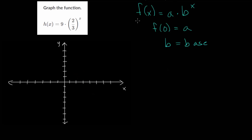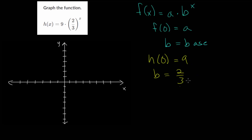We can compare to the general formula or start by making a table — both ways are valid. If you plug in 0 to h(x) = 9·(2/3)^x, you get 9 back since (2/3)^0 is just 1. So our starting value a is 9, and we'll use a scale of 2. Our base b is 2/3, and since this is a fraction less than 1, we're dealing with exponential decay — as x increases, the function decreases.